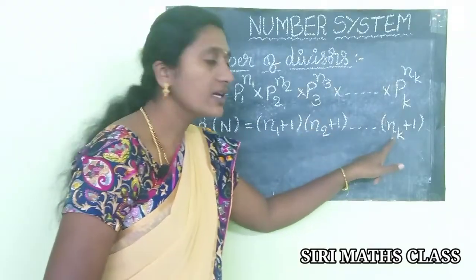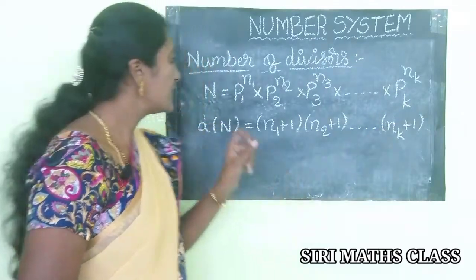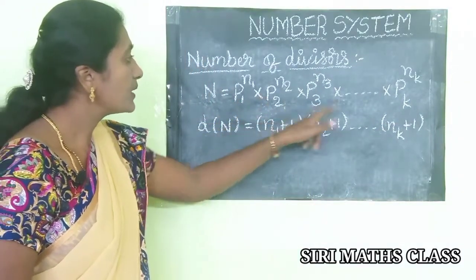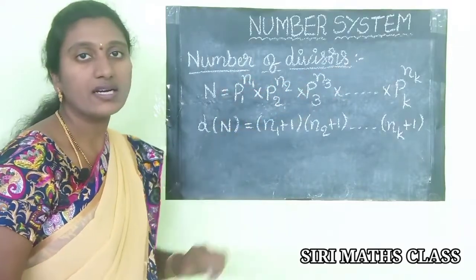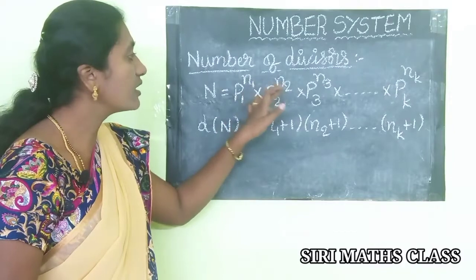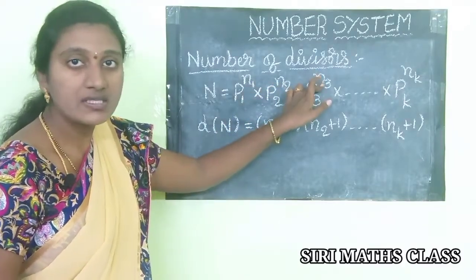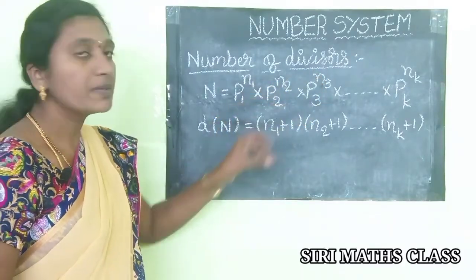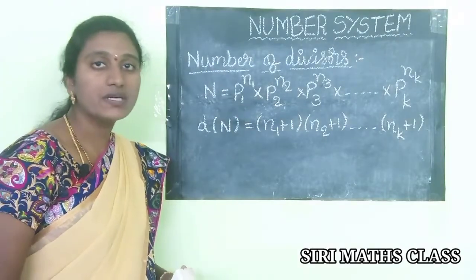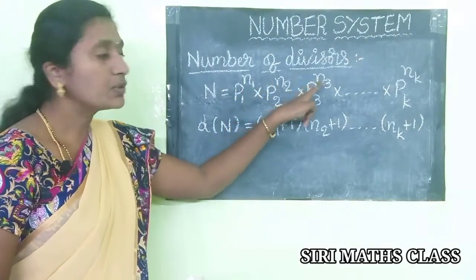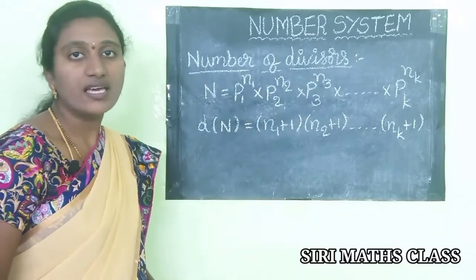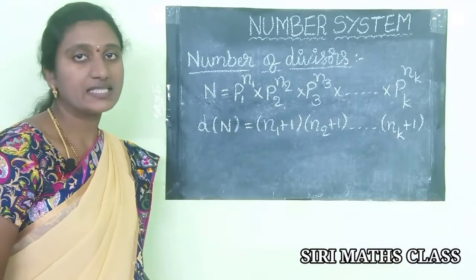Here p1, p2, p3 and so on are the bases, and n1, n2, n3 are the powers. p1, p2, p3 are different prime numbers, and n1, n2, n3 are natural numbers. Now let us solve one problem — take one example.